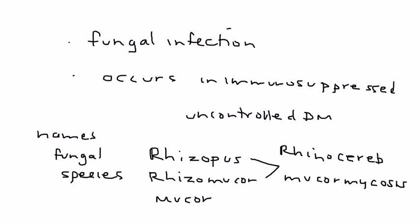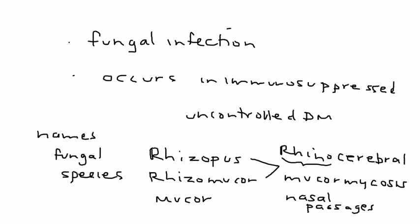Rhino-cerebral gets its name because 'Rhino' refers to the nasal passages and sinuses, while 'cerebral' refers to the fact that Rhino-cerebral mucormycosis also involves the brain.